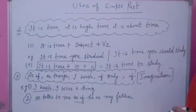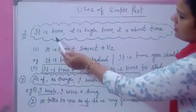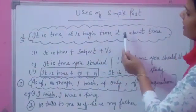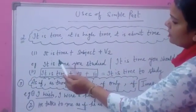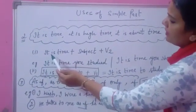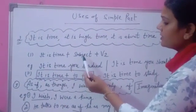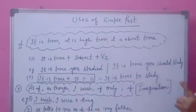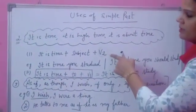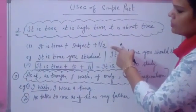The second use of simple past tense is whenever you find it is time, it is high time, it is about time, you will follow this structure. First of all, you will write it is time, after that subject, and after this subject you will always use simple past tense. Not another tense will be used here. Only simple past tense will be used here.